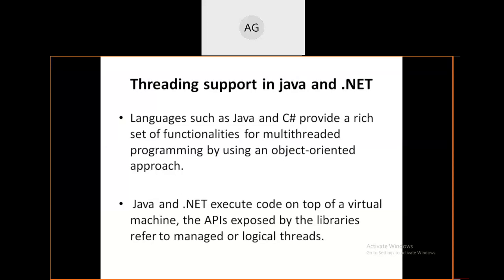Threading supports Java and .NET. These are familiar languages where we use the common thread operations: start, stop, suspend, resume, abort, sleep, join, and interrupt. If you want to start or stop a thread, you control the lifetime of the thread. Each thread has a certain scheduling time; after completion of that time, it is switched off and sent to thread local storage.